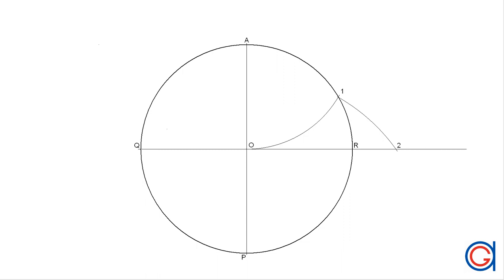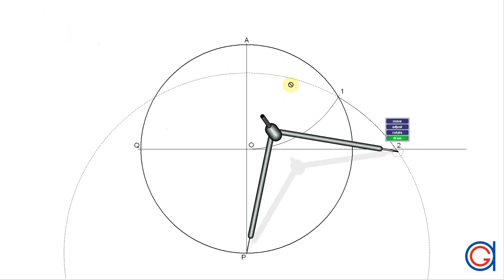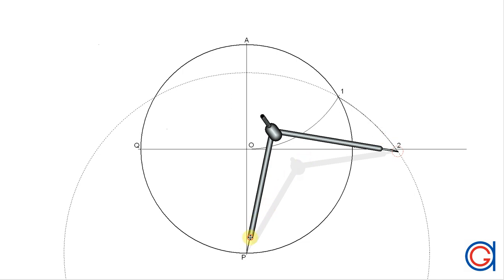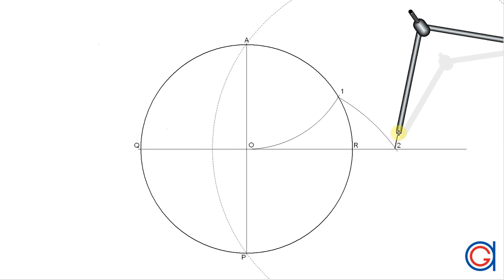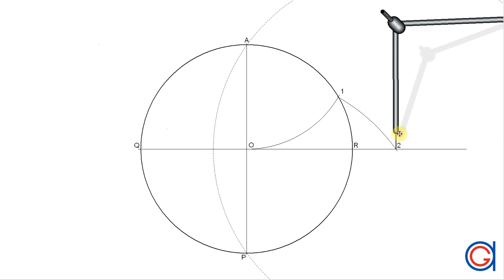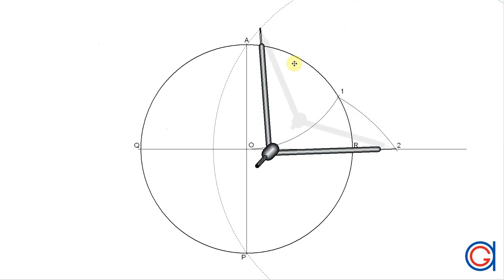So now with the same radius and setting our compass on the new point 2, we will scribe an arc to the left which goes through point A and point B, cutting our horizontal diameter at a new point which we will call point 3.